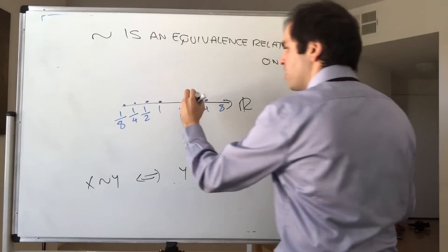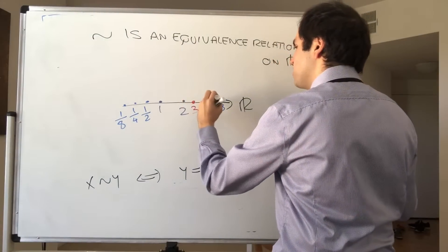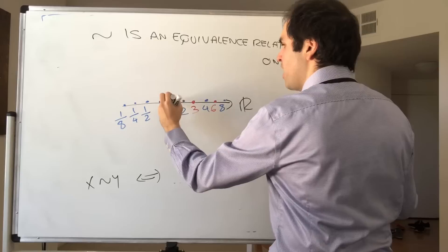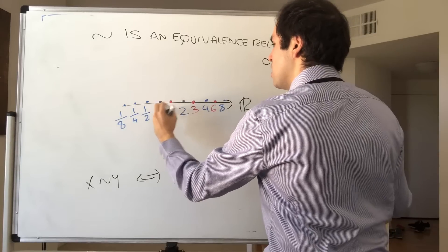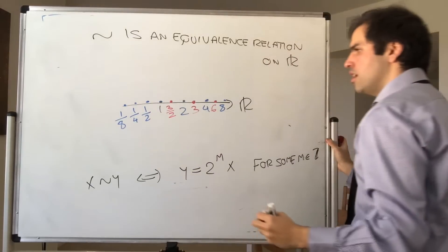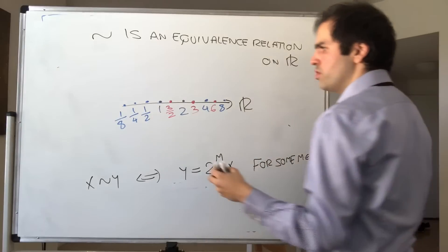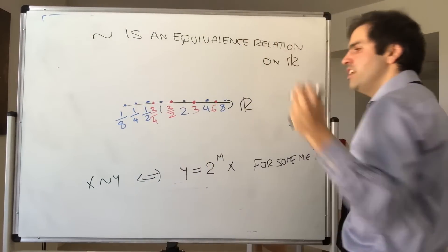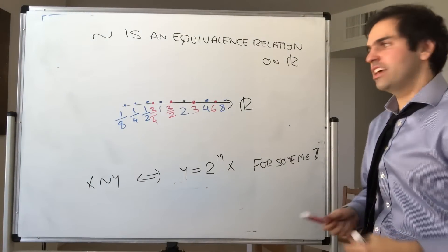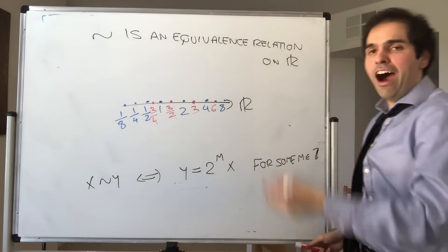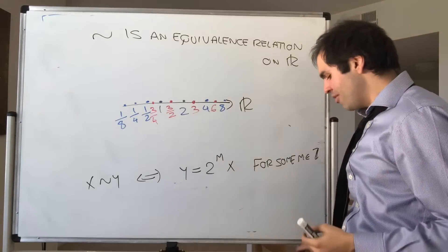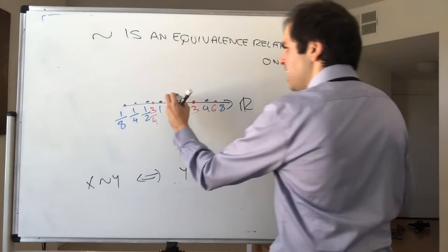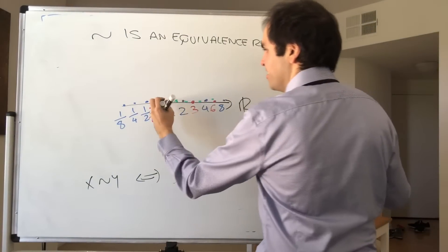But then, for instance, another one, let's say 3, 6, and then 3 halves, and 3 quarters, they're in another equivalence class. And then 5, and then 10, et cetera, are in another equivalence class. So you basically have a bunch of equivalence classes here.